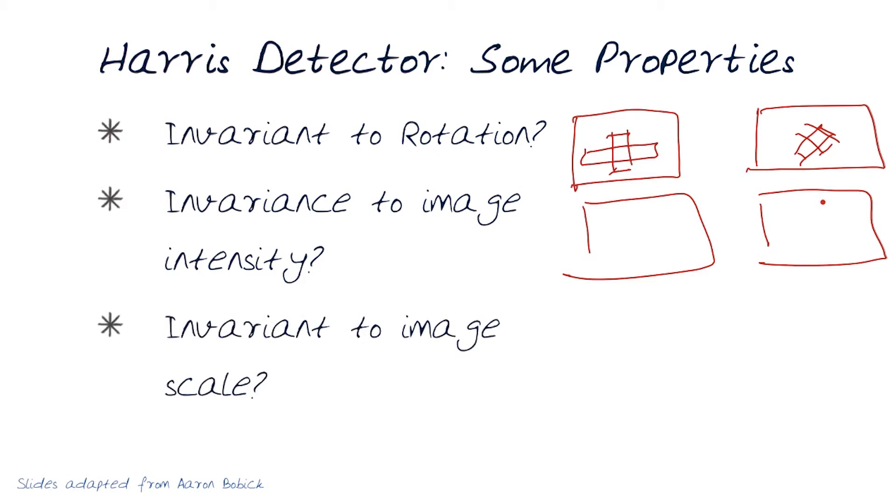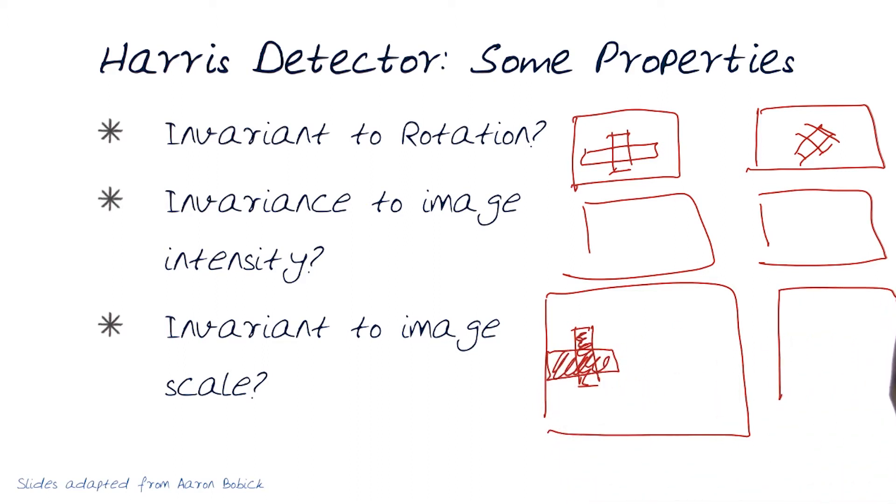The third part that we need to be invariant to is image scale. What that basically means is I have an image with an object that is here at this scale, but in the second image, I have the same object, but it is, in this case, much bigger.